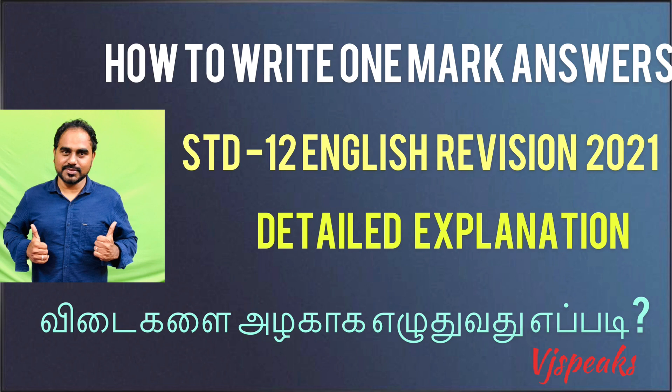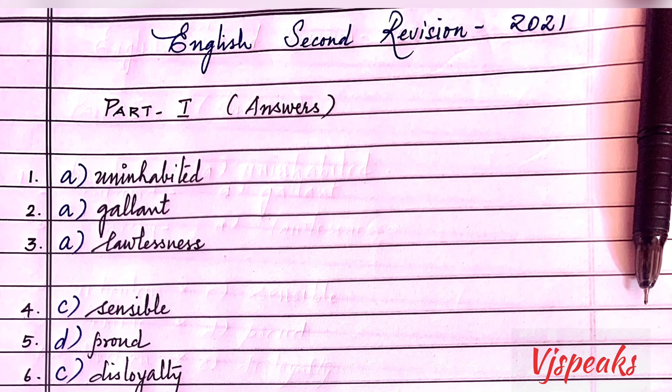Detailed explanation plus answers — you can see how to write one mark answers. If you want to write on a rule paper, you can write the question number in the margin. You can write all the questions because you write the question number in the margin.